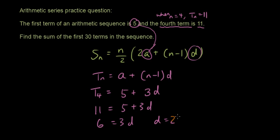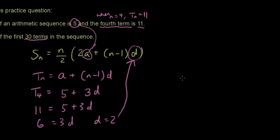So now that we know d is 2 and we know a is 5, we know n is 30 because we want to know the sum of the first 30 terms. So let's substitute everything we know into this formula. So S30 equals 30 divided by 2 bracket 2 times 5 plus 30 minus 1, so 29 times 2.